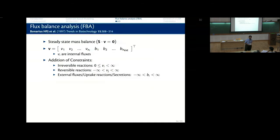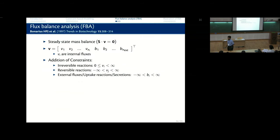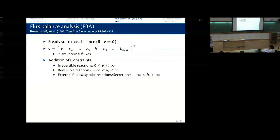What kind of optimization is this? If I say maximize V_biomass such that S·v = 0, with a linear system of equations and a linear objective function, this is a linear program — an LP. You encountered linear programs in school: a factory producing tables and chairs, maximizing profit subject to constraints. You draw it on graph paper, shade the feasible region, look at intersection points, and find the optimal solution.